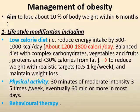Management of obesity: the aim is to lose about 10% of body weight within 6 months. This should be achieved by lifestyle modification, which includes low-calorie diet, physical activity and behavioral therapy. Low-calorie diet means reduction of energy intake by 500 to 1000 calories per day. The diet should be balanced with complex carbohydrates, vegetables and fruits, proteins, and less than 30% of calories from fat. This will achieve a weight reduction of about 0.5 to 1 kg per week.